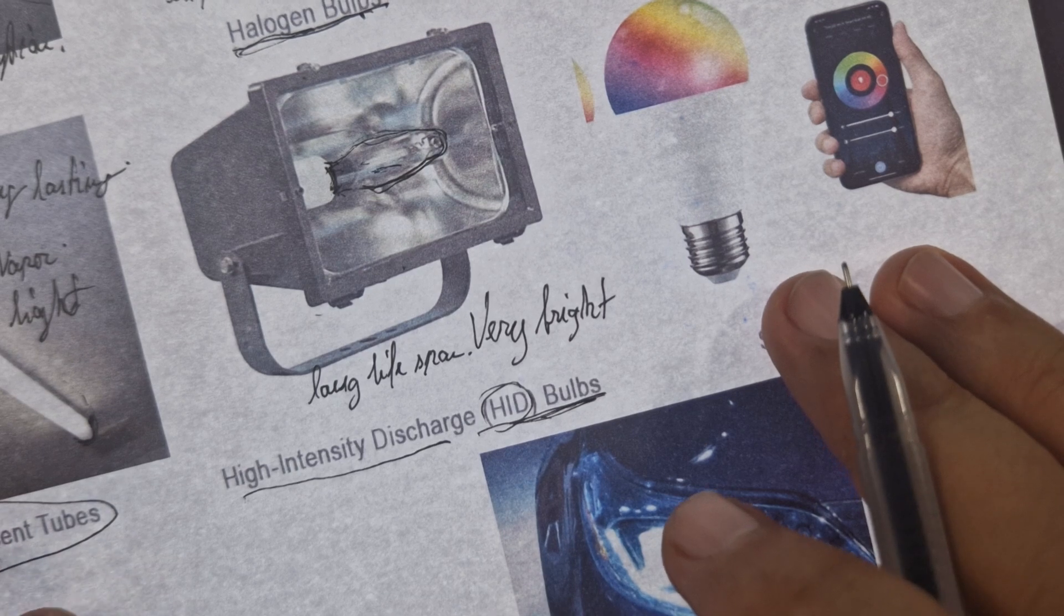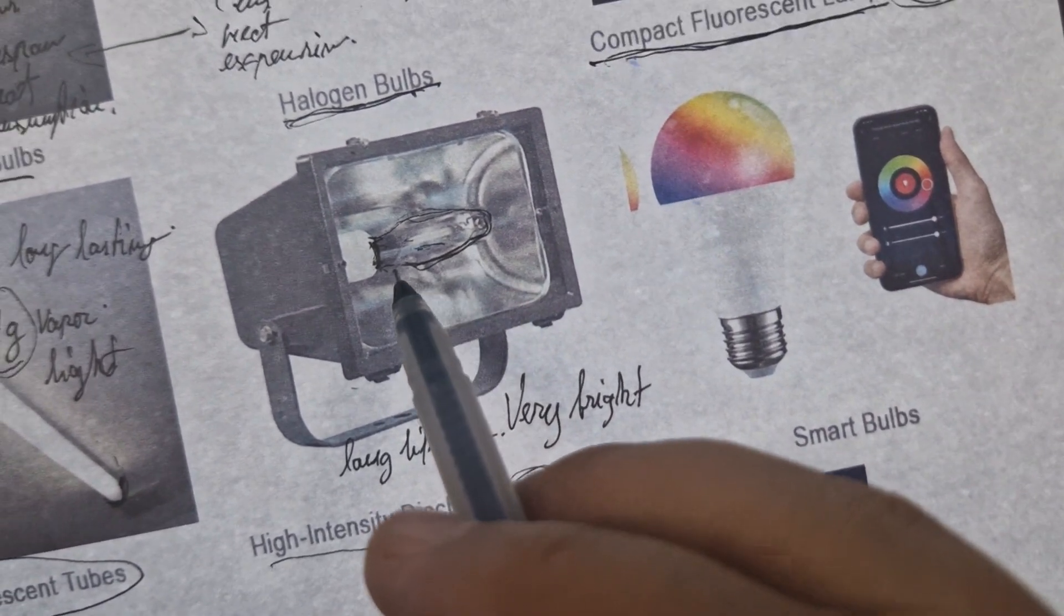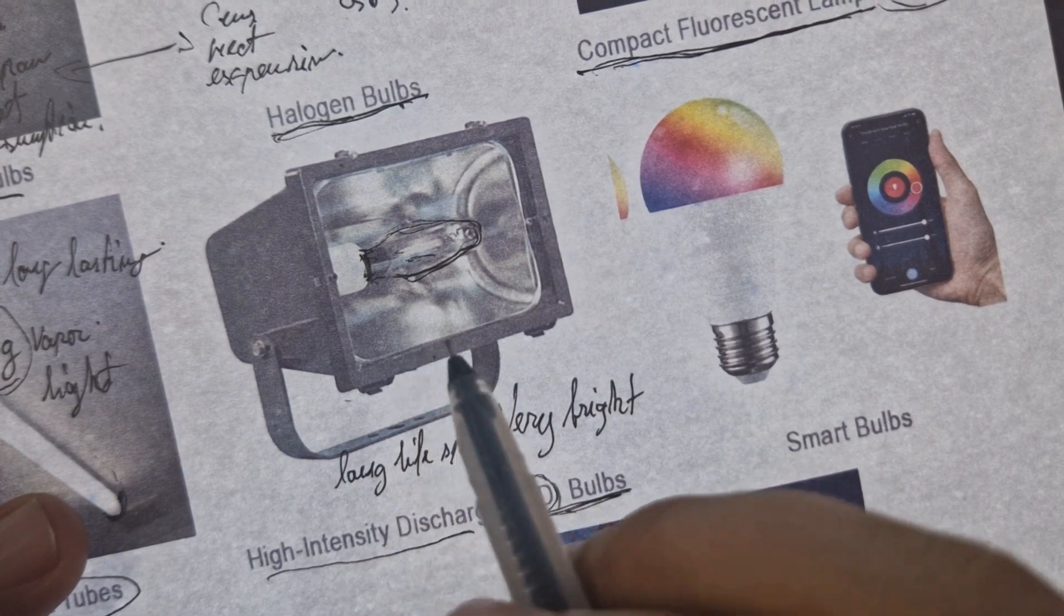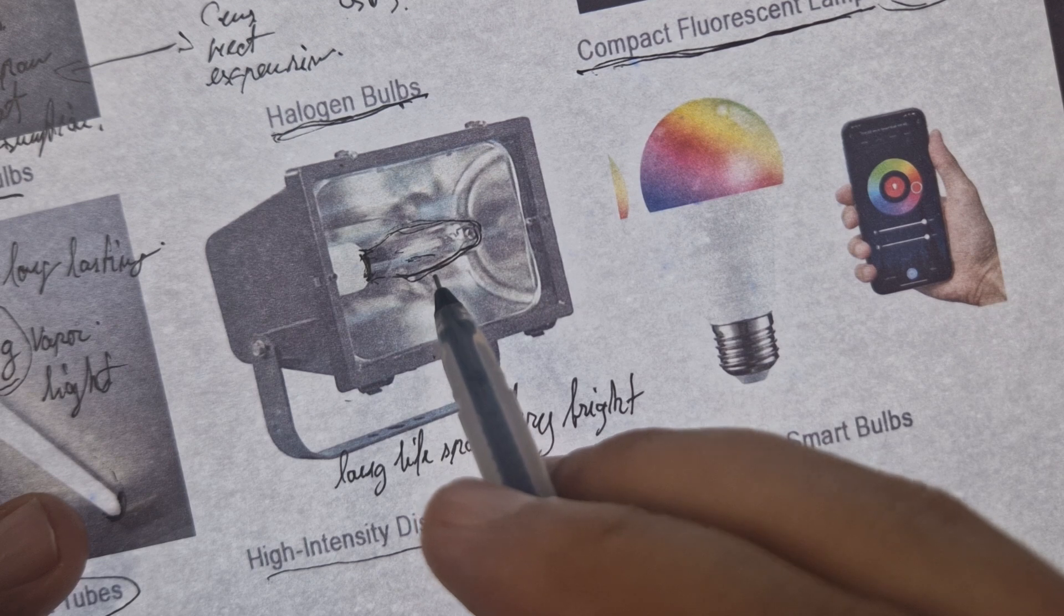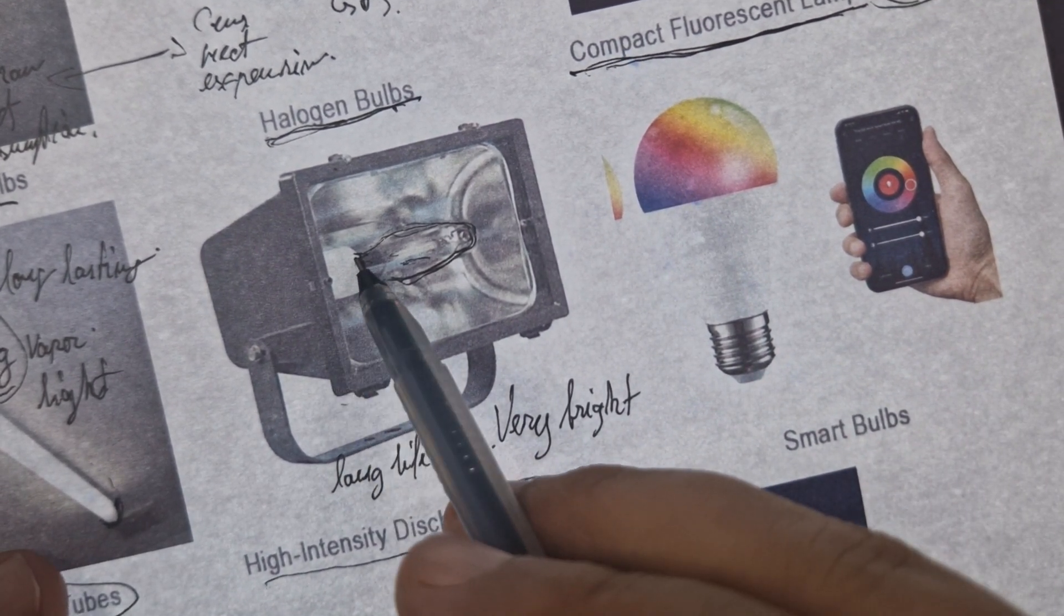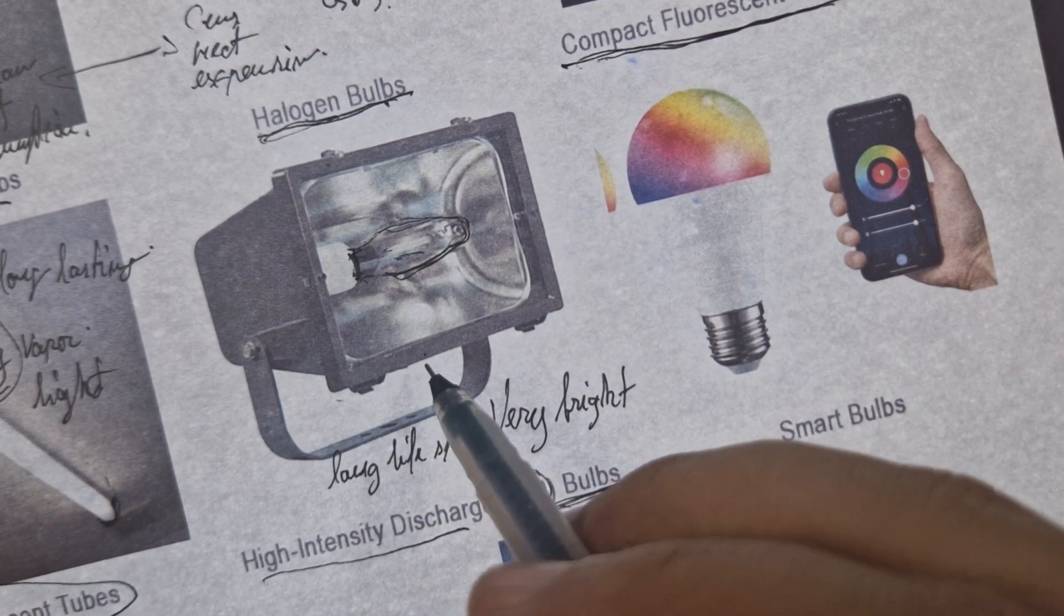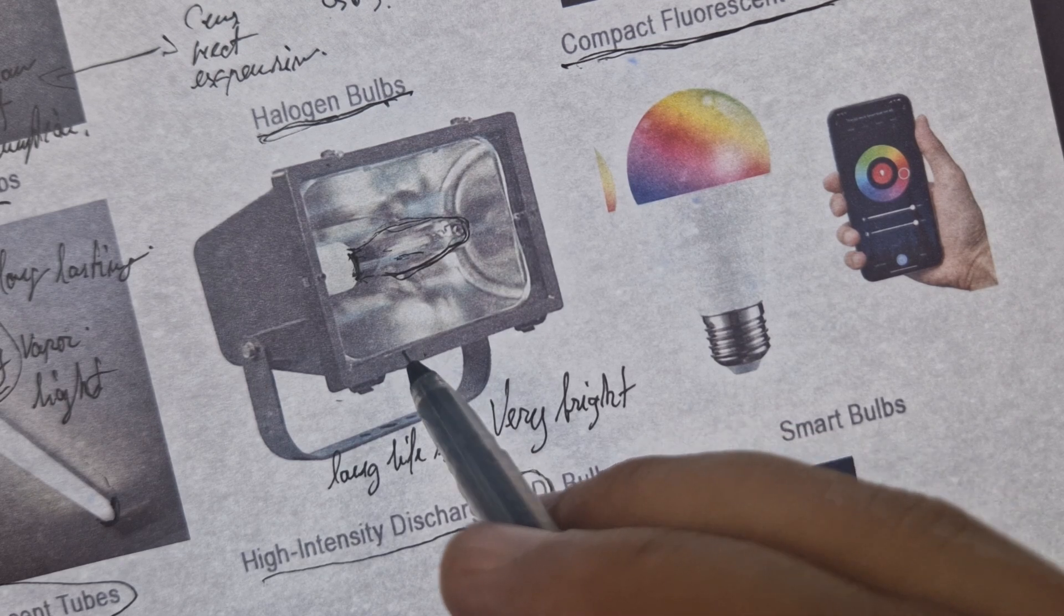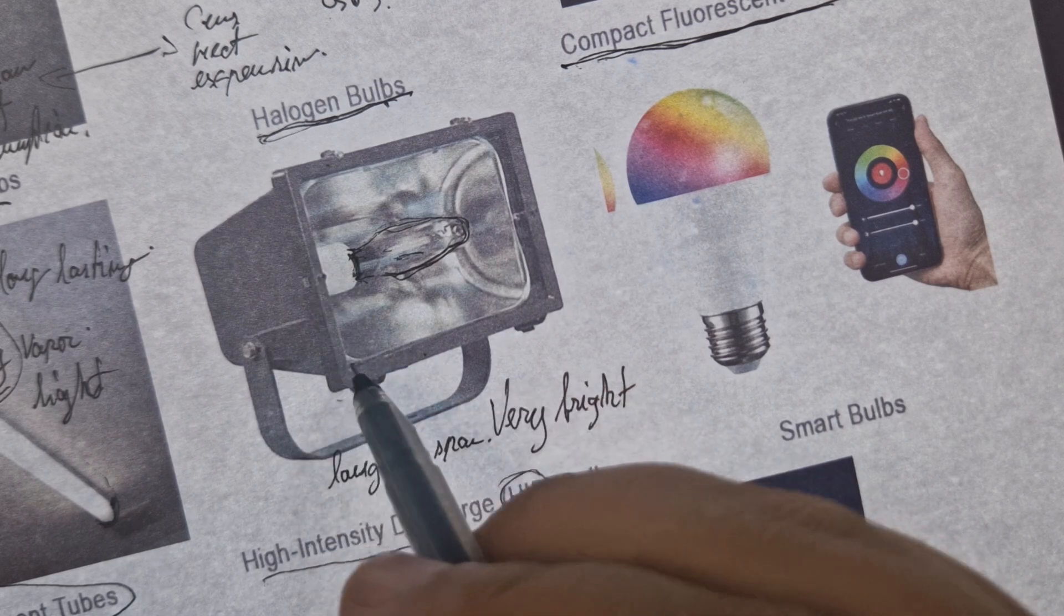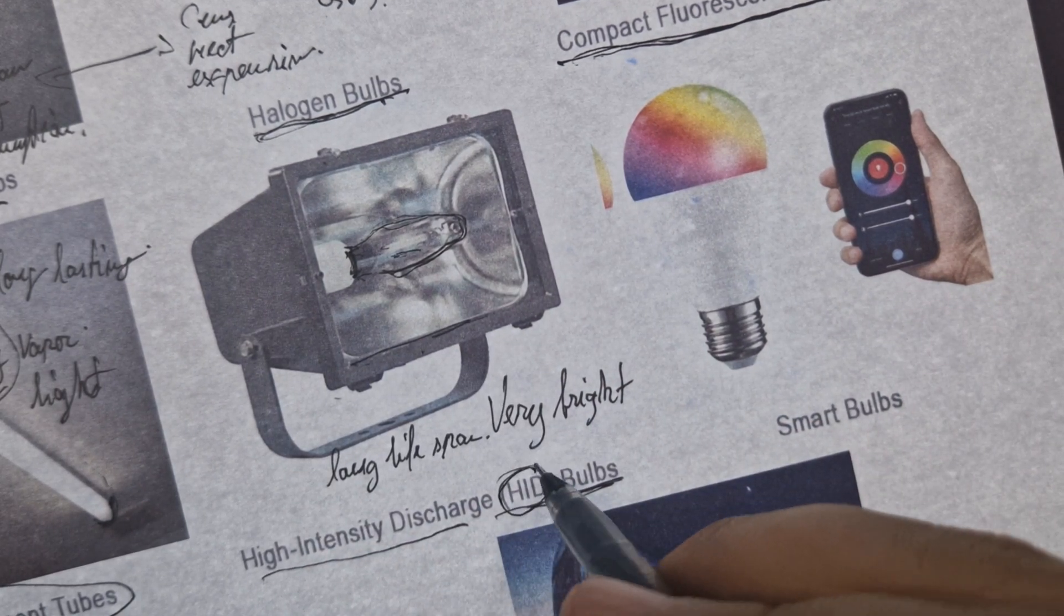But there are some cons. It will take some time to warm up, they are more expensive, and require special fixtures. That's why they are used to light buildings at night, for example, or landmarks. These are the sort of lamps that use HID bulbs.